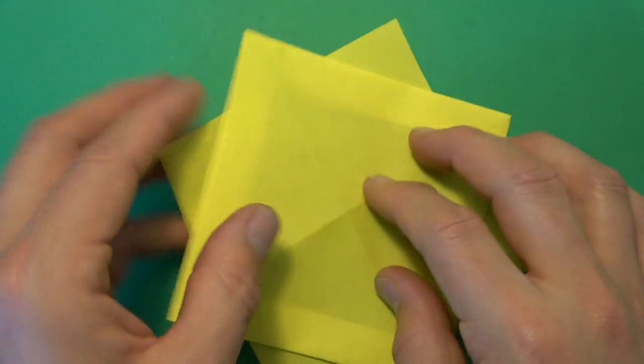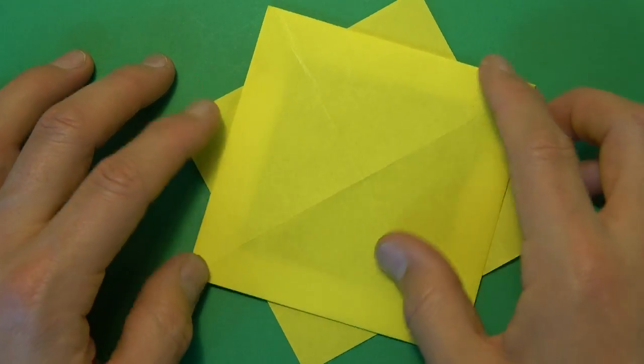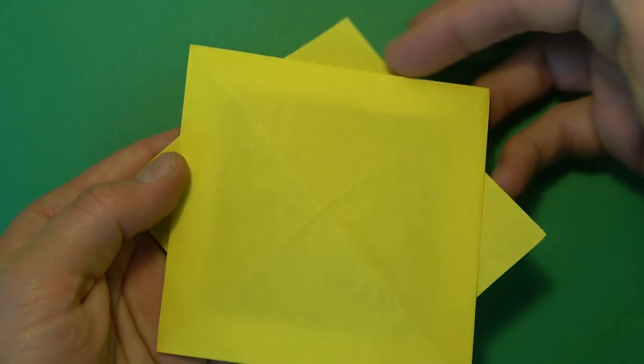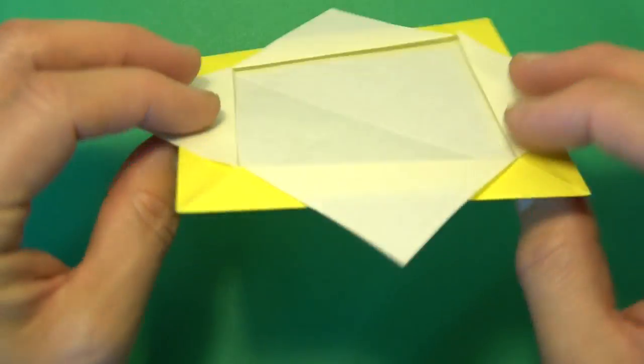And let's turn over. So here we have the eight-pointed star. But it doesn't look very good because it looks more like a square on top of a square. So we're going to turn back over.